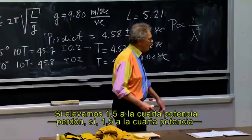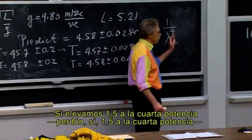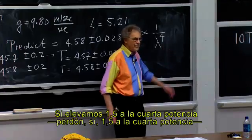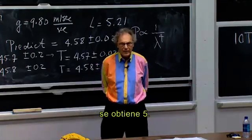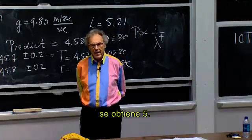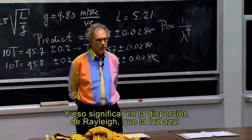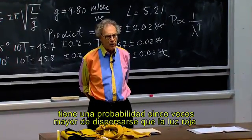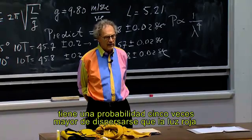And so if you take 1.5 to the power of four, you get five. And that means in Rayleigh scattering, blue light has a five times higher probability to scatter than red light.